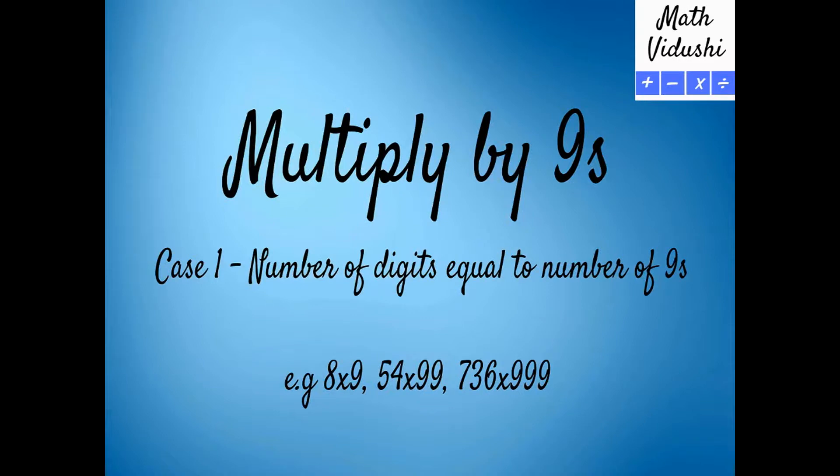Okay, so let's proceed on multiplication with 9's where the number of digits is equal to the number of 9's. That is 8 multiplied by 9—8 and 9 both have one digit each. 54 multiplied by 99—54 and 99 have two digits each.